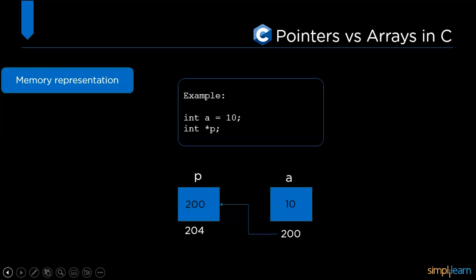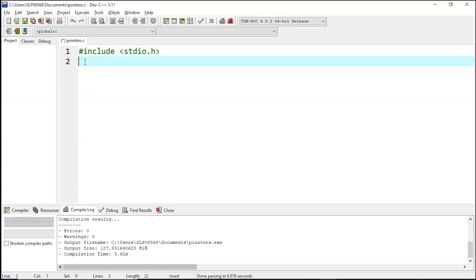So now let's execute a program using a pointer variable. As you can see on my screen, let's create a main function and inside that, declare a variable int a and assign a value 10. Then create a pointer variable, and we have to give a reference of a, not the variable a.